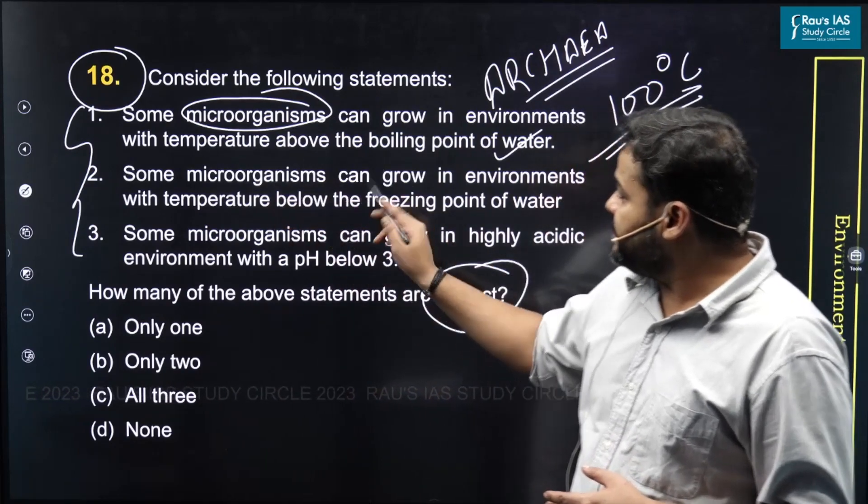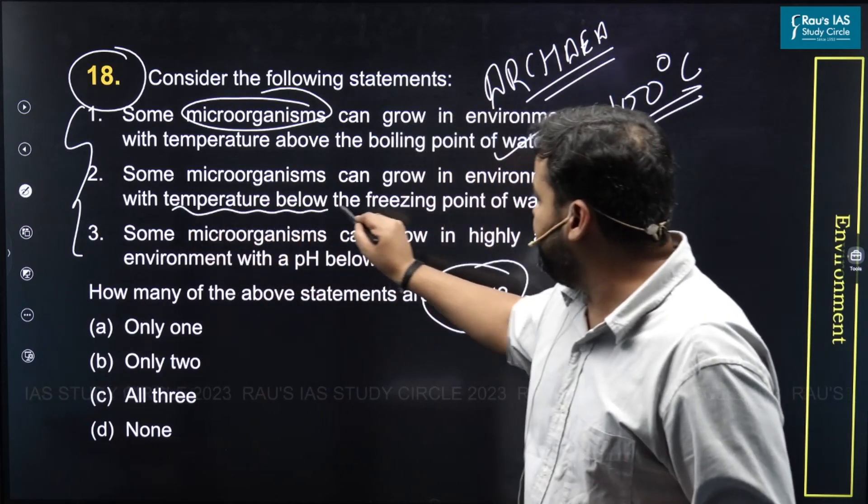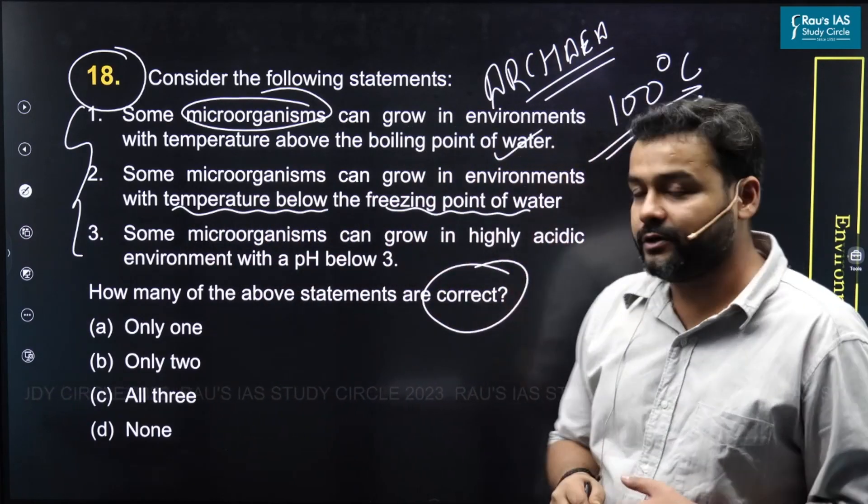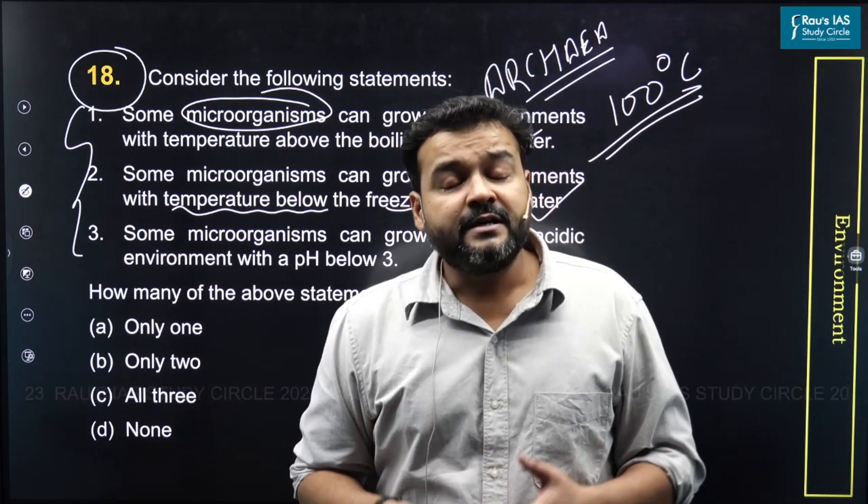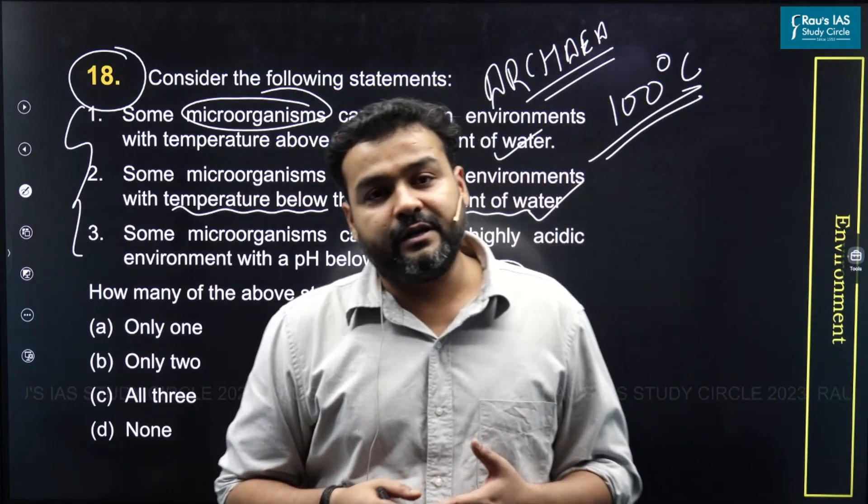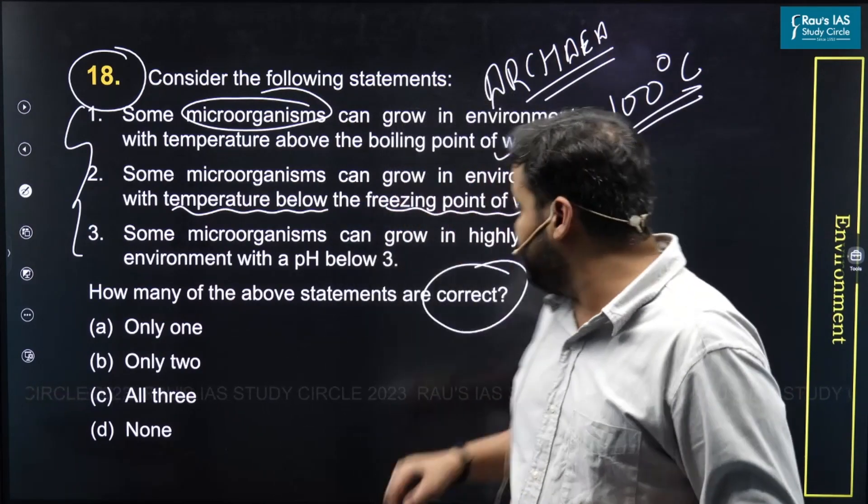Statement two says some microorganisms can grow in environments with temperature below the freezing point of water. This statement is again correct because some microbes have the property of releasing antifreeze proteins. One of the prime examples is...